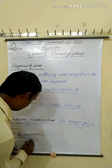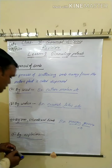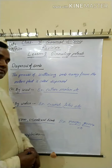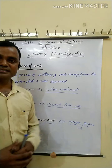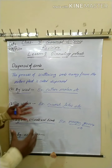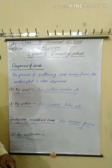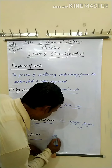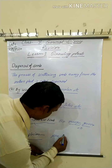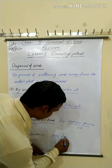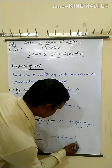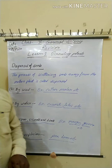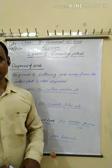Fourth and last: by explosion. Some plant seeds are dispersed by explosion. Examples: pea, bean, etc. — their seeds are dispersed by explosion.